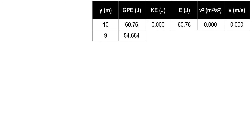The principle of conservation of total mechanical energy says whatever leftovers I have in my energy equation will be kinetic. The equation is E = GPE + KE, so KE = E − GPE = 60.76 − 54.684 = 6.076 joules. The kinetic energy leftovers factor is going to be different at each elevation because you get faster and faster. The number in the kinetic energy column gets bigger and bigger as you go down, while the potential energy column gets smaller and smaller, because you're losing potential energy.